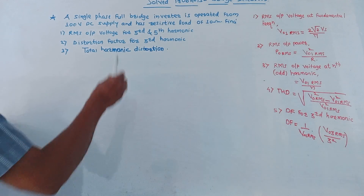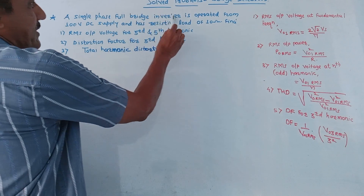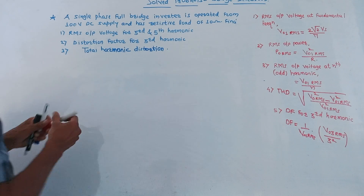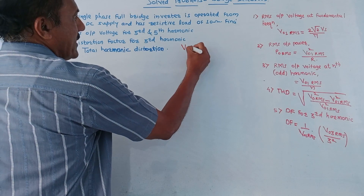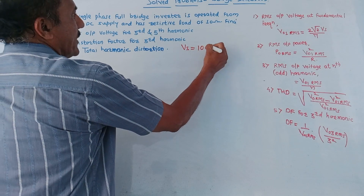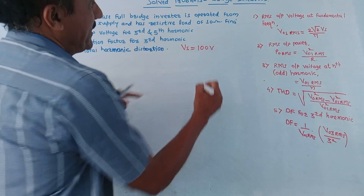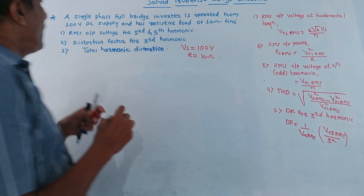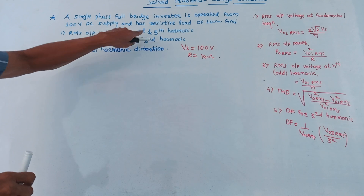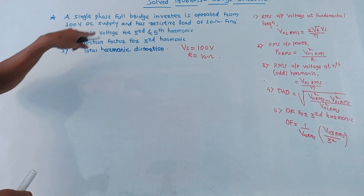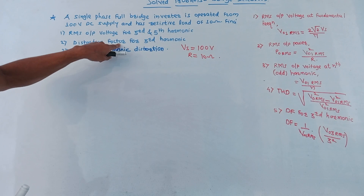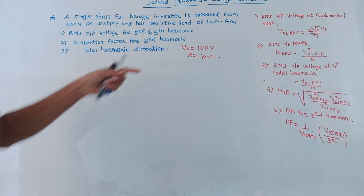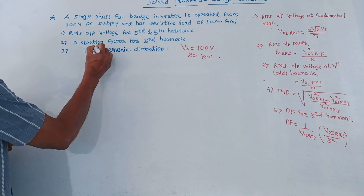Now let us discuss one numerical. A single phase full bridge inverter is operated from a 100 volt DC supply — this 100 volt is the given value of Vs. The load resistance R is given as 10 ohm. Find: first part, RMS output voltage for third and fifth harmonic; second part, distortion factor (DF) for third harmonic; third part, total harmonic distortion (THD).